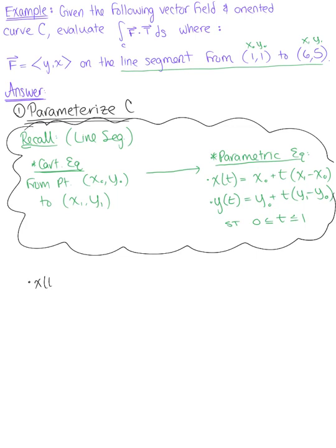So we have that x(t) is going to be equal to 1 plus t multiplied by (6 minus 1), which leaves us with 1 plus 5t for our x component. And our y component is 1 plus t times (5 minus 1), or 1 plus 4t.